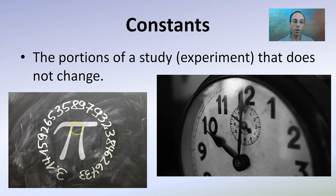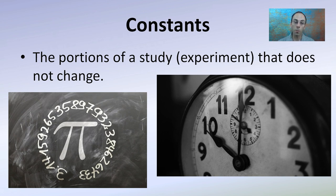Constants are different from control groups. Constants are portions of the study or experiment that do not change — for example, pi is the same number regardless. In our plant-growing example, a constant could be the size of the container. We want the growing media, the container, and the environmental conditions to be as constant as possible across all plants, so the fertilizer variable can be clearly shown.